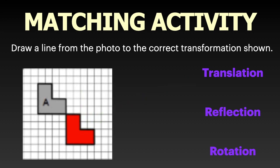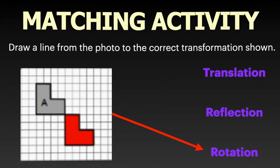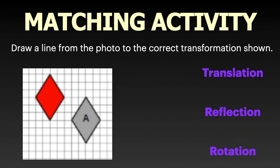Based on the photo, what transformation is shown — translation, slide, reflection, flip, or rotation, turn? What did they do to get from figure A to the colored figure? If you said rotate, you are correct! Good job.